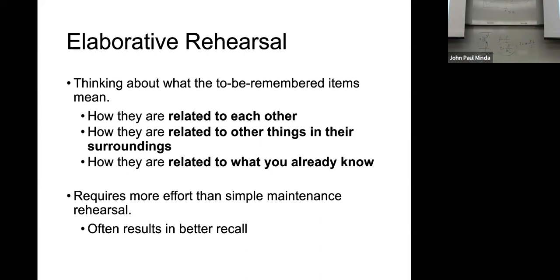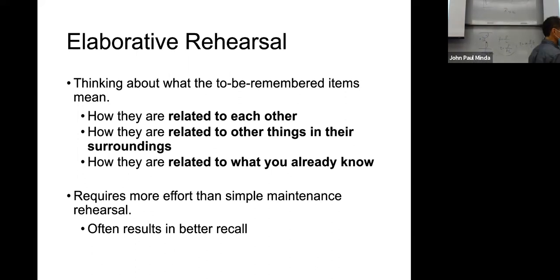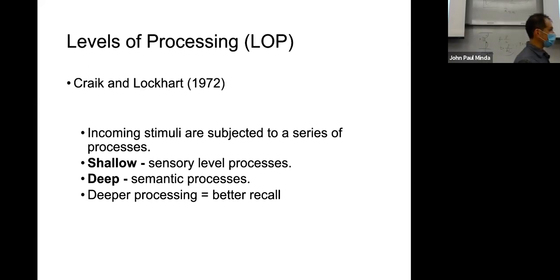Elaborative rehearsal is when you want to learn something — you elaborate on each piece of information, paying attention to how it's related to other information, how it relates to surrounding context, or how it connects to what you already know. It's a way to process information such that you're elaborating as much as possible on the semantic character of that information. This does require more effort, but the payoff is better retention later on. This work from the 1970s really challenged the dominant modal view — suggesting we can learn things sometimes without even trying.